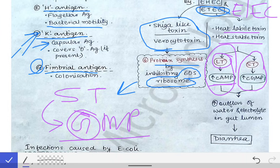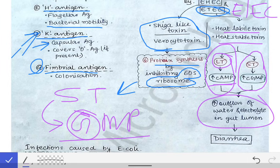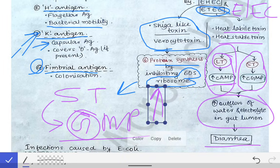So heat-labile toxin acts by increasing cAMP while heat-stable toxin acts by increasing cGMP. After this increase in cAMP or cGMP, there is increased outflow of water and electrolytes into the gut lumen. Whenever there is increased electrolyte and fluid in the gut lumen, that causes diarrhea. This is the pathogenesis of the heat-stable and heat-labile toxins of enterotoxigenic E. coli. We will see the pathogenesis of the Shiga-like toxin when we discuss enterohemorrhagic E. coli.